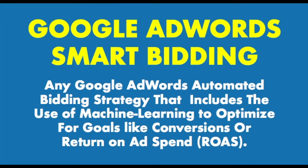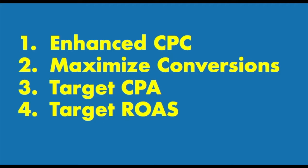There are four different bidding strategies: enhanced CPC (enhanced cost per click), maximize conversions, target CPA, and target return on ad spend. One important note about all four of these bidding strategies — you need conversion tracking. You can't just be sending clicks to your website with no conversions set up. We have other tutorials about how to set up conversions, whether it's leads or sales — it's very easy to set them up with Google Analytics and then track them into Google AdWords.